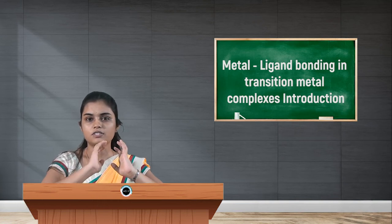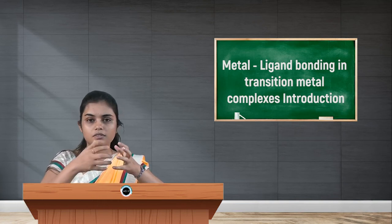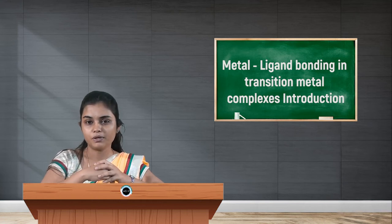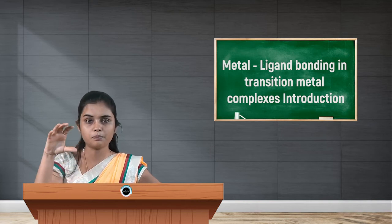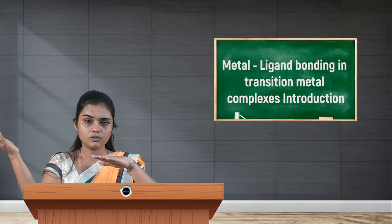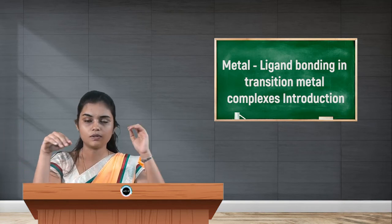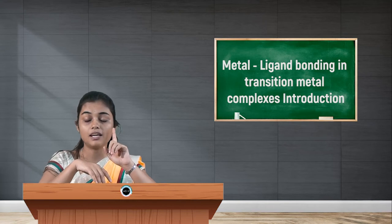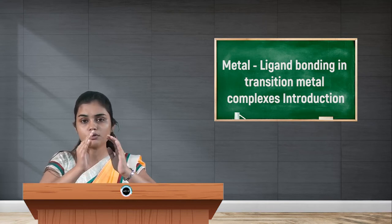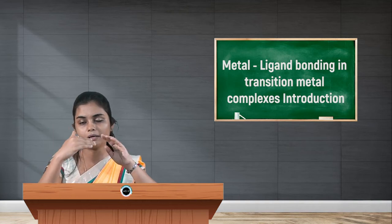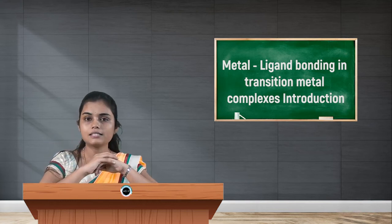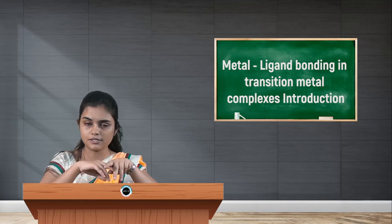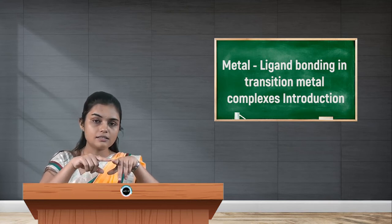First we shall discuss what are transition elements. Transition elements are the D-block elements which occupy the middle of the periodic table. On either side will be the P-block elements and on one side will be the S-block elements. We call them transition elements because there is a transition of electropositive character to electronegative character. There are three important series of transition elements: the 3D series, 4D series, and 5D series.